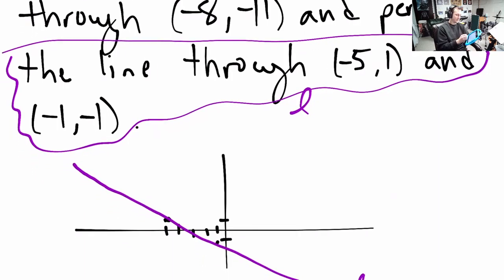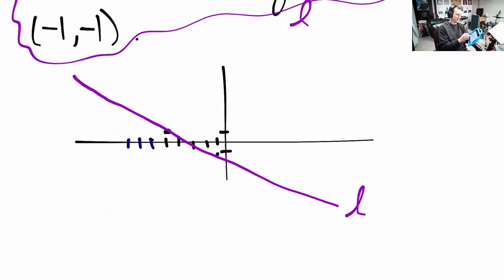So negative 8, negative 11, that's 1, 2, 3, 4, 5, 6, 7, 8. Negative 11, I'm just going to throw a guess out here. It's like 1, 2, 3, 4, 5, 6, 7, 8, 9, 10, 11. Maybe something like this.